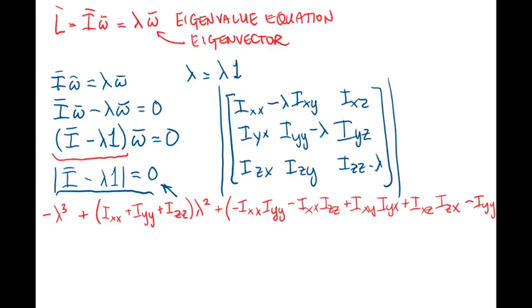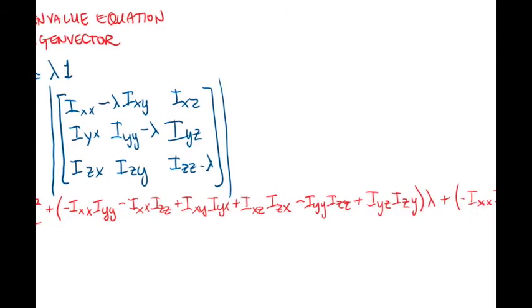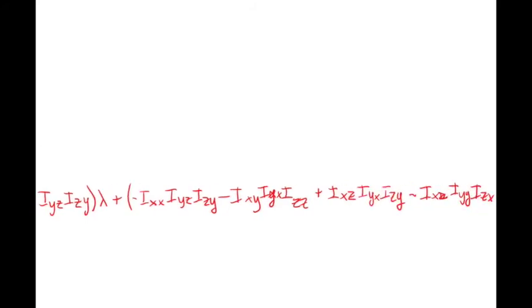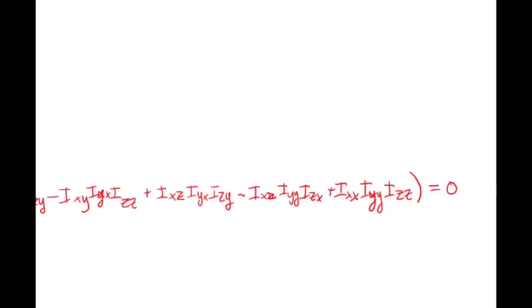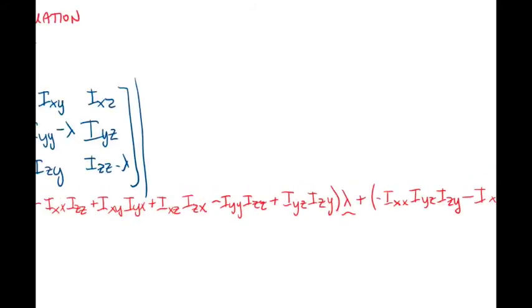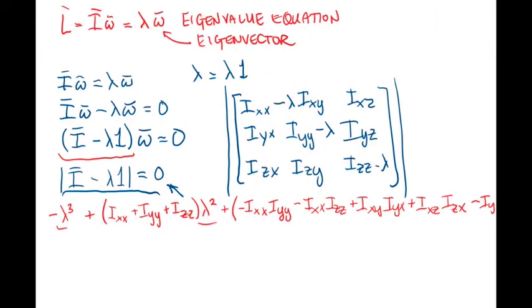Just to show you what that equation looks like, here it is. We've got a lambda cubed, a lambda squared, and a lambda to the first power. Now, hopefully when you're solving this, you'll either have real numbers or fewer terms, because that's a lot of terms.